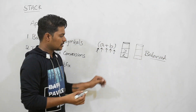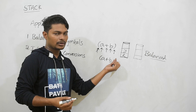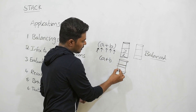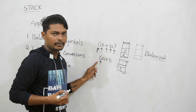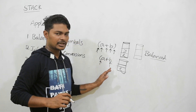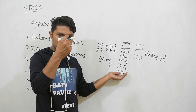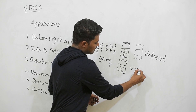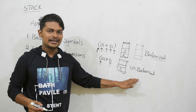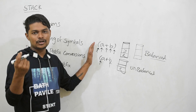Suppose I take another expression where by mistake I didn't put a closing bracket. The compiler scans, pushes the open bracket onto the stack, ignores the other symbols, and reaches the end of the expression. It finds the open bracket still remaining in the stack — this means the expression is unbalanced. So we use a stack to determine whether an expression is balanced or unbalanced.